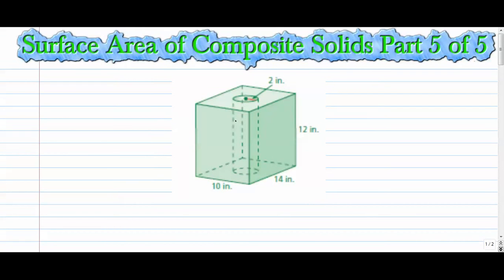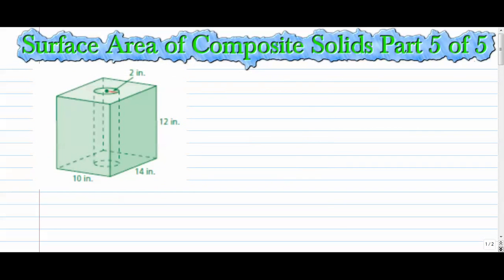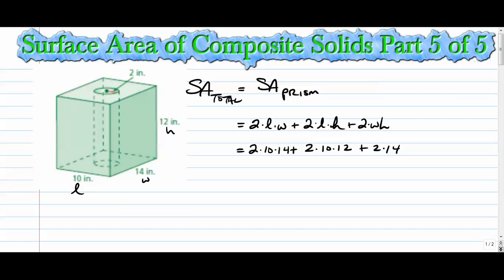So let's get started here. Let's go to our formulas. We want to think about the formula for the surface area of the prism first. The surface area for a prism is 2 times L times W plus 2 times L times H plus 2 times W times H. So let's just assign this L, W, and H. We go 2 times L times W, 10 times 14, plus 2 times 10 times 12, plus 2 times 14 times 12.